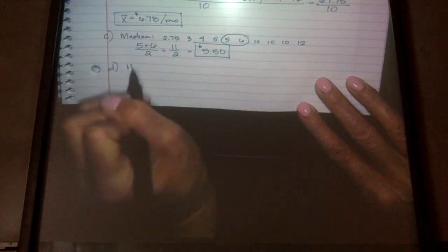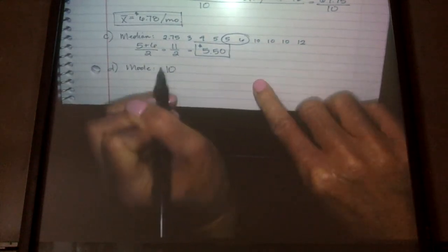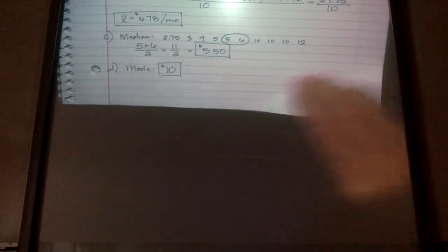D, mode. There are three 10s, so $10 is your mode.